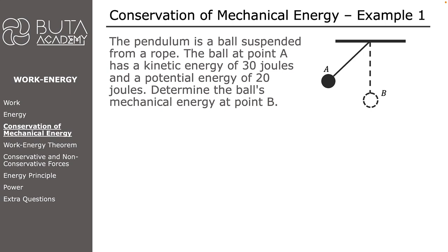We are going to start with the simplest one and increase the level by each question. The pendulum is a ball suspended from a rope. The ball at point A has a kinetic energy of 30 joules and a potential energy of 20 joules. Determine the ball's mechanical energy at point B.